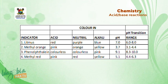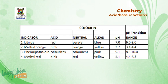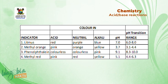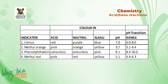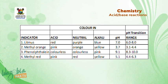Number three is phenolphthalein: colorless in acidic medium, colorless in neutral medium, pink in alkaline medium, pH 9.1, and pH transition range 8.3 to 10.0. Number four is methyl red: pink in acidic medium, red in neutral medium, yellow in alkaline medium, pH 5.1, and pH transition range 4.4 to 6.3.